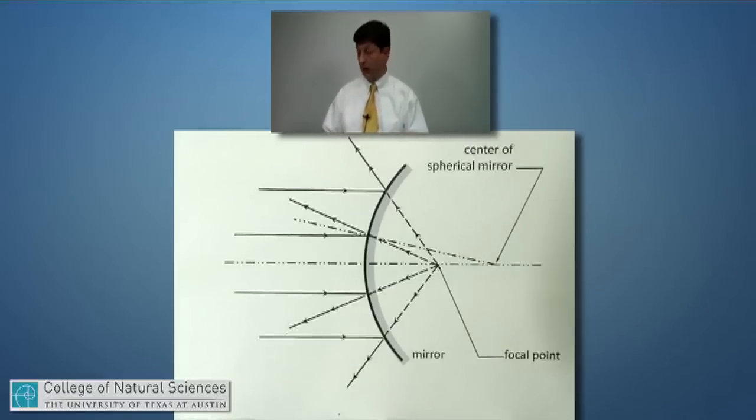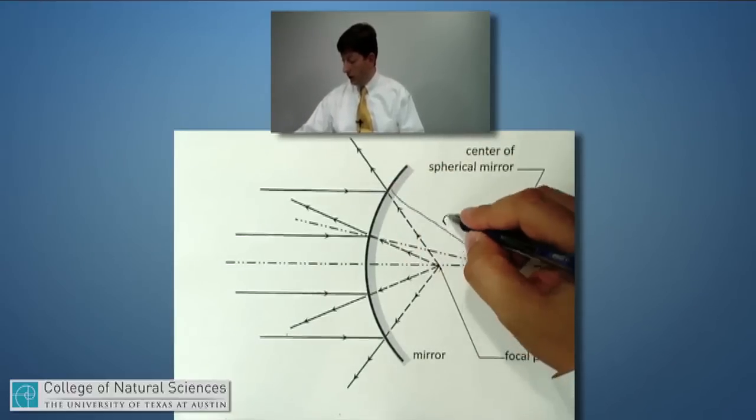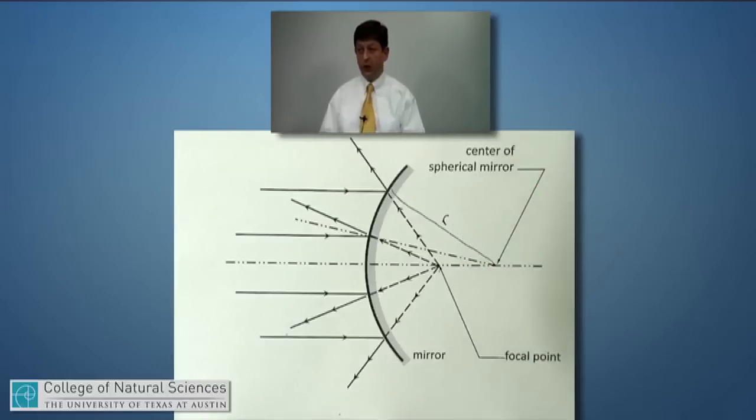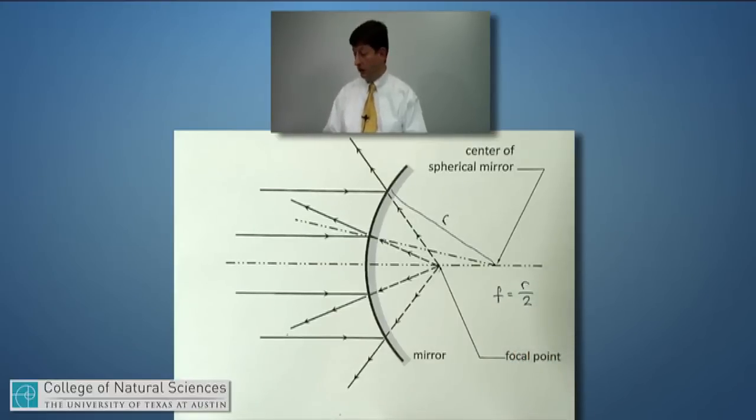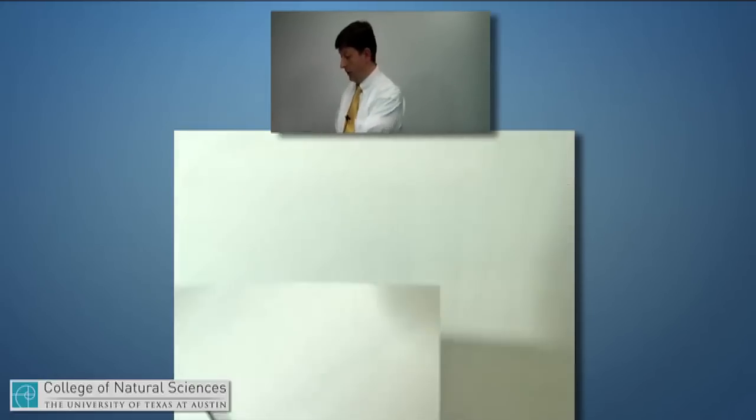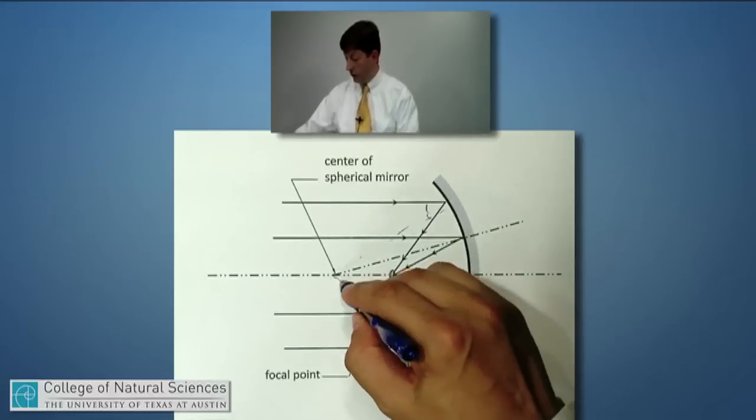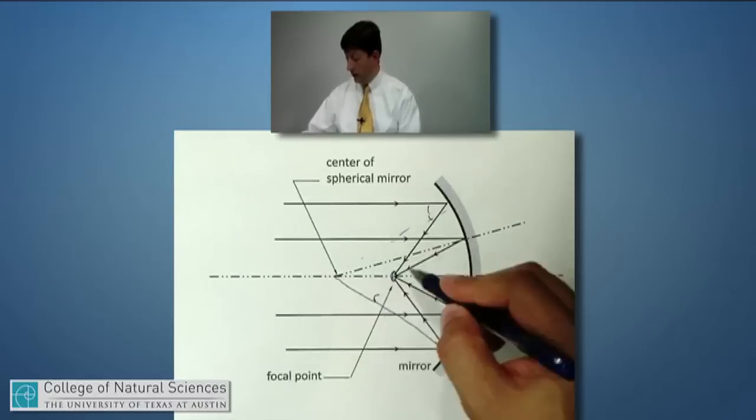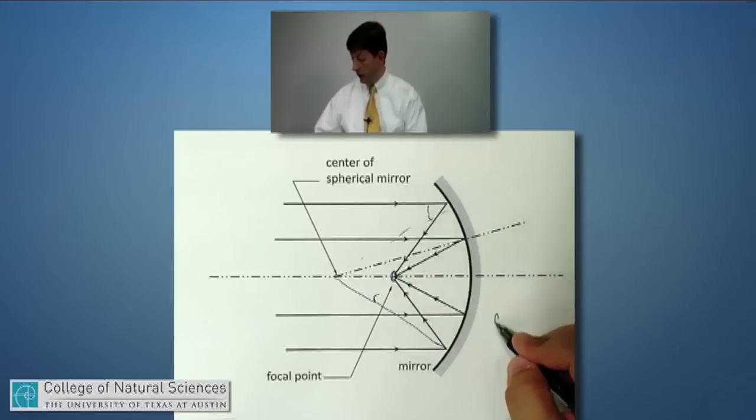It depends on how curved the mirror is. If this dimension right here represents the radius of curvature R for the mirror, it's always true that the focal length is equal to R over 2. It's half the radius of curvature. That's also correct for the other kind of mirror, the concave mirror. If this is the radius of curvature right here, R, then the focal length, how far in front of the mirror this focal point is, is again F, which is going to equal R over 2.